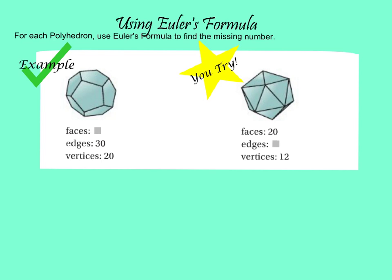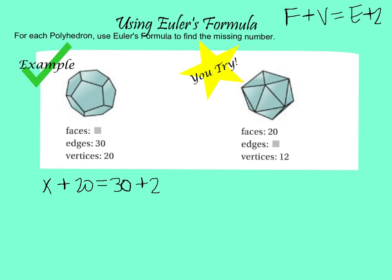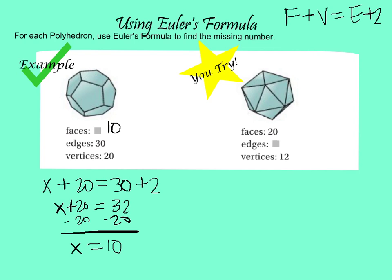Now let's use Euler's formula to find the missing number. Writing the formula: F plus V equals E plus 2. We don't know the faces, so we write x plus 20 equals 30 plus 2. That gives us x plus 20 equals 32. Subtracting 20 from both sides, x equals 10 — so the number of faces is 10. You try — here's your problem, use the formula and then move on.